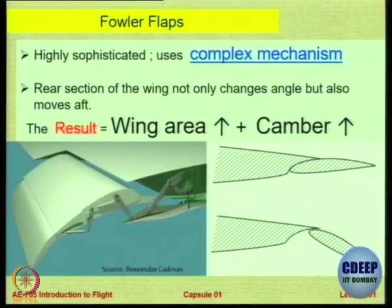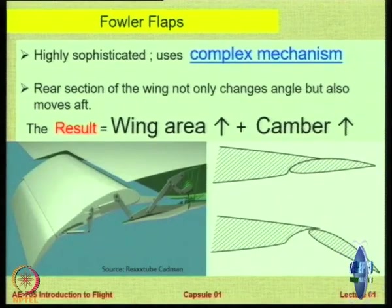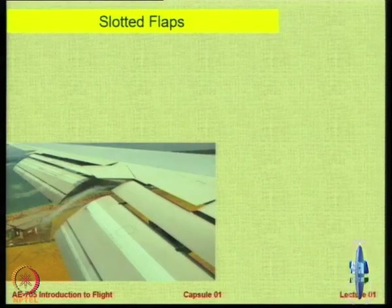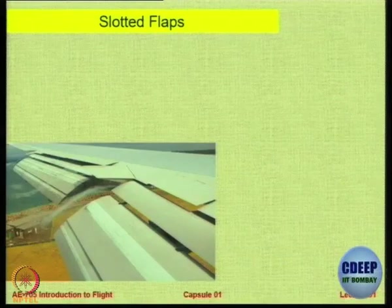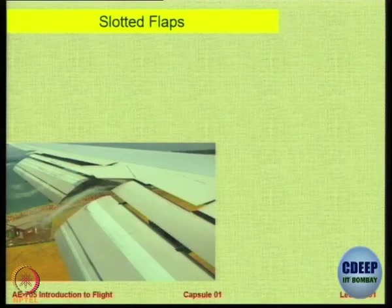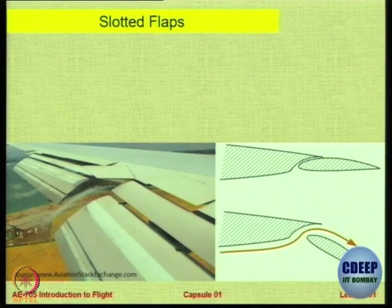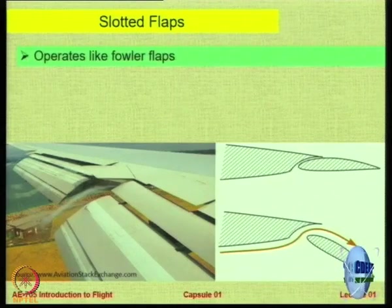With Fowler flaps, the wing area goes up and the curvature — called camber — also goes up; we will study this in the airfoil section. Slotted flaps are flaps where you create an air gap between the two or three moving parts. This is an example of double-slotted Fowler flaps, both inboard and outboard. You create a small gap, and we will see later what happens there.